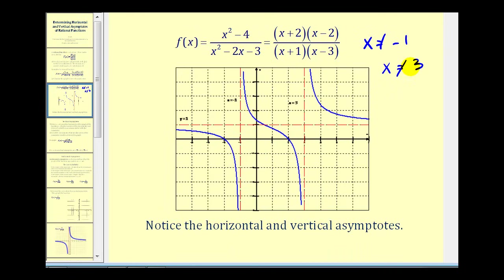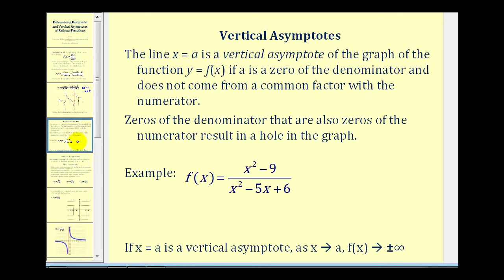Let's take a look at how we determine the equations of the vertical asymptotes. The line x equals a is a vertical asymptote of the graph of the function if a is a zero of the denominator and does not come from a common factor with the numerator. Zeros of the denominator that are also zeros of the numerator result in a hole in the graph, not a vertical asymptote.